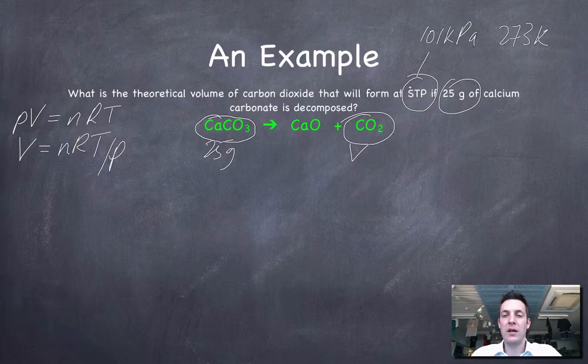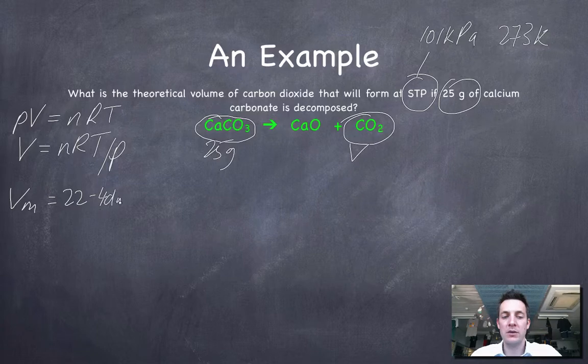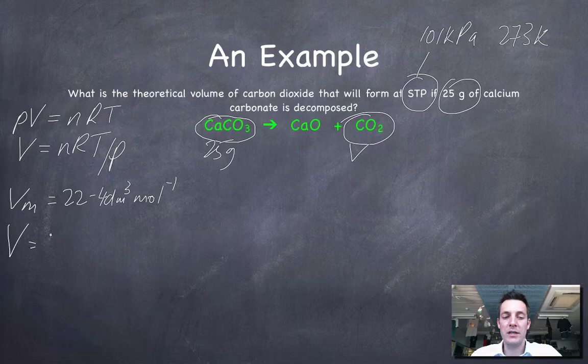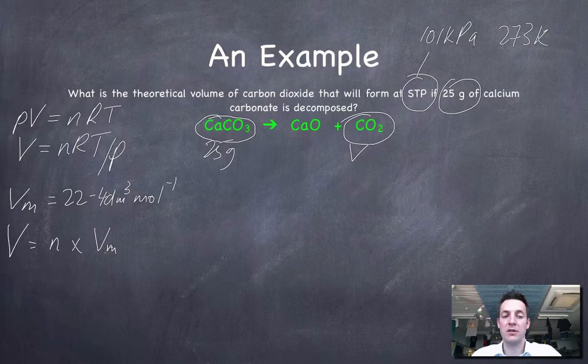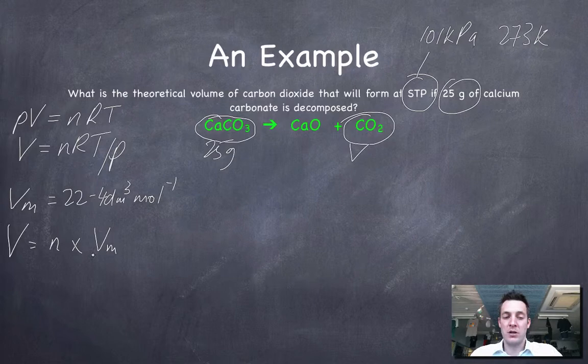So if I can find the number of moles of calcium carbonate, I can plug that into here and I'm away. However, I might consider it easier, seeing as I'm at STP, to use the molar volume of a gas, because I know that the molar volume of a gas at STP is 22.4 dm³ for every mole of gas. So if that's the case, then the volume of gas that I'll collect at STP will be the number of moles multiplied by the molar volume.